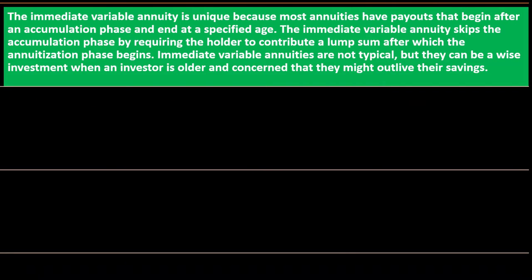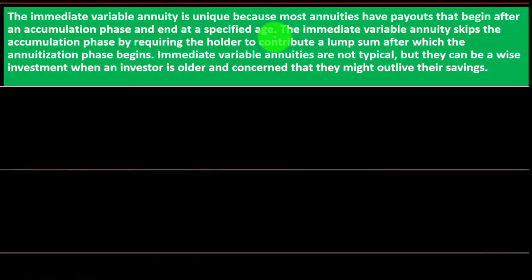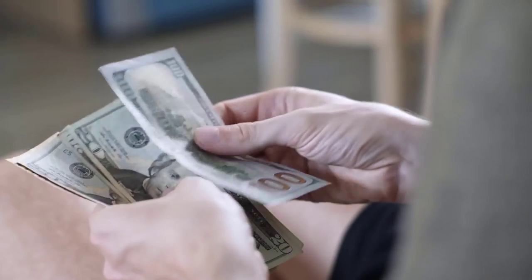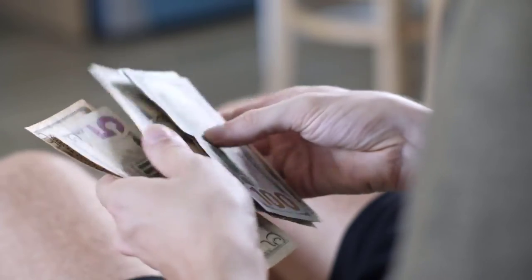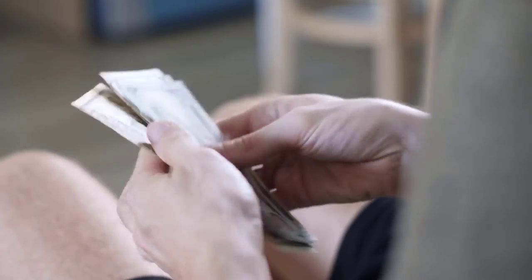The immediate variable annuity is unique because most annuities have payouts that begin after an accumulation phase and end at a specified age. In the normal kind of annuity, you put money in, give it time to grow in value, and often have a specific end date. That end date gives more determination in terms of what's being invested in and takes on less risk for the insurance company, since they can calculate exactly what is happening.